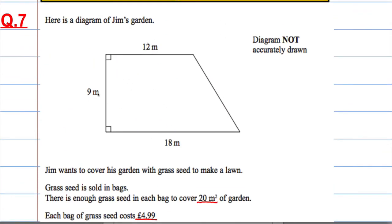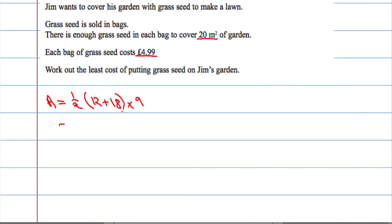So add the parallel sides, half your answer, and then multiply by 9. 12 plus 18 is 30, 30 divided by 2 is 15, and then 15 times 9—very similar to 15 times 10, 15 times 10 take away 15—is going to be 135 meters squared. Let's just double-check that again: 12 and 18 is 30, let's do 30 times 9 which would be 270, half of 270 is 135. Yeah, so I'm happy with that. So the area of his garden is 135 meters squared.